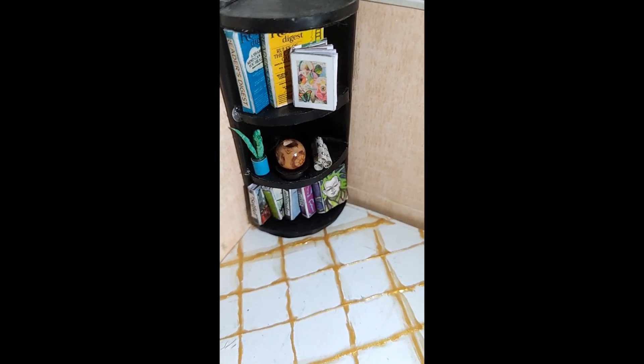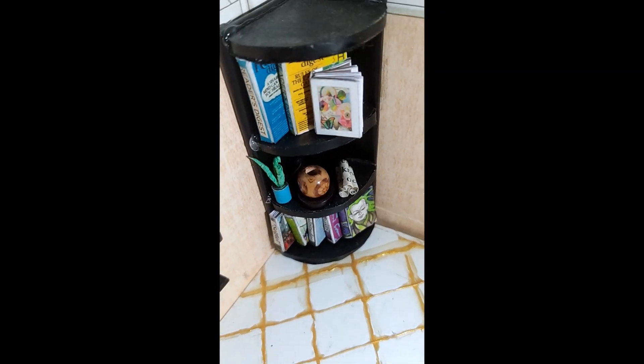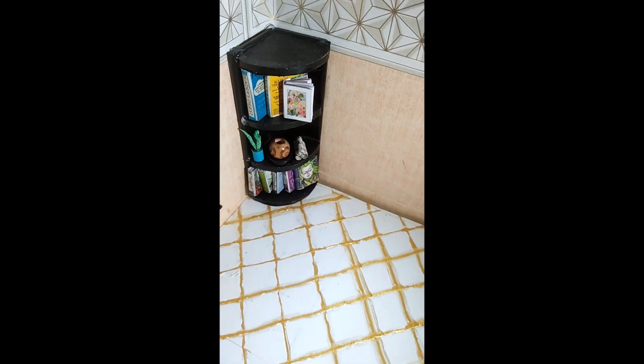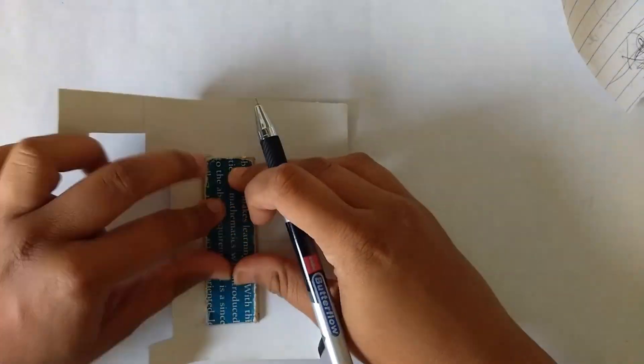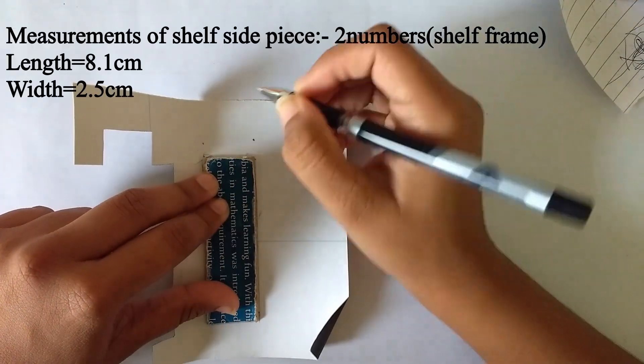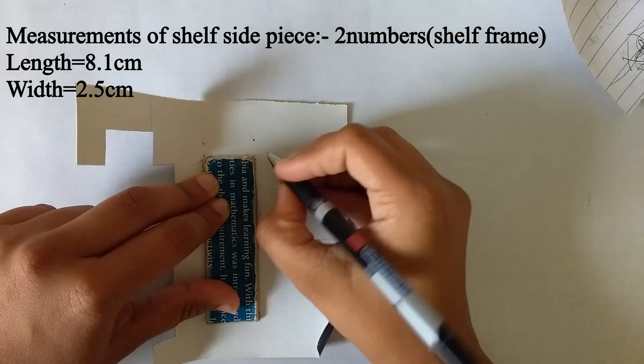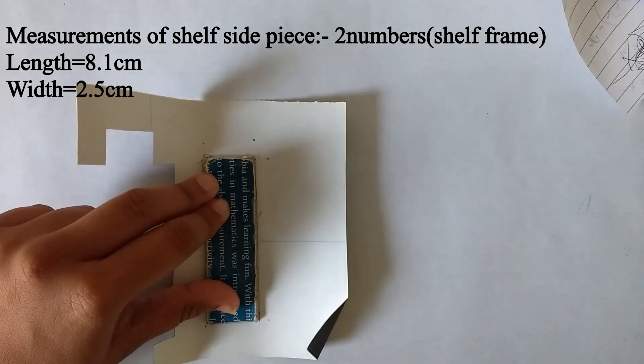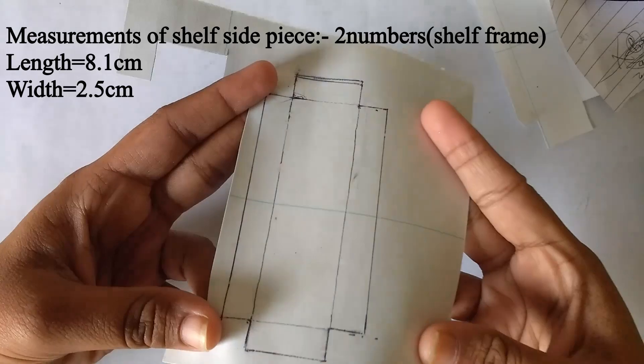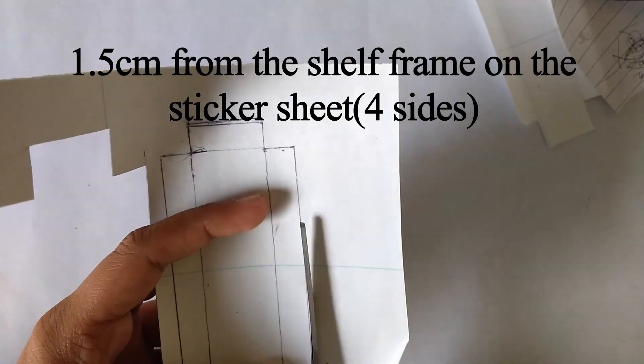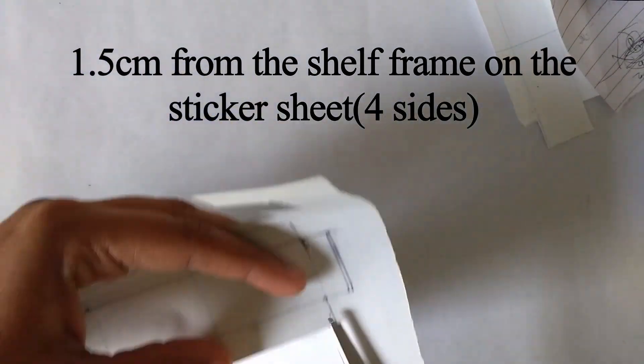Hi guys and welcome back to my channel. I'm back with a new video. Today I'm going to show you how to make a miniature bookcase or bookshelf. Take two cardboard pieces with the measurements shown. From your cardboard frame or the bookcase frame, take 1.5 centimeter extra so you can stick the sticker correctly.